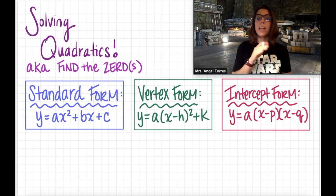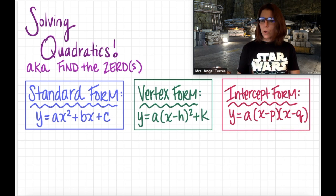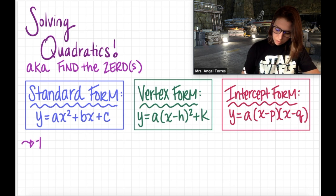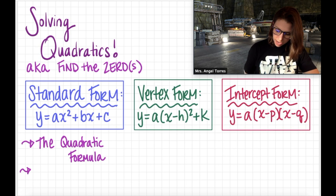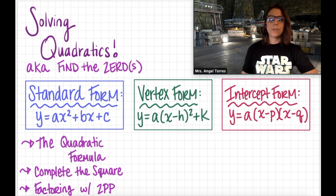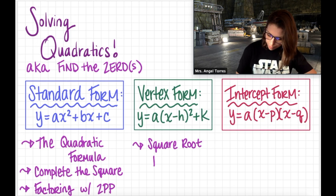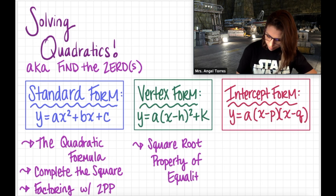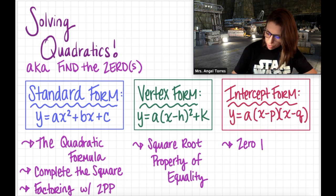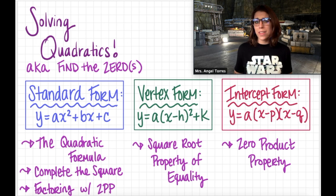Standard form, vertex form, and intercept form. There are different tools that we can use depending on the form that we're given. For standard form, there are a lot of tools that we're going to go over. We're going to learn how to use what's called the quadratic formula. We'll also learn how to complete the square. And we're going to learn how to do some factoring with something called the zero product property. In vertex form, we're going to learn how to use what's called the square root property of equality. And in intercept form, we are going to use something called the zero product property. So these are all tools that allow us to find those zeros to solve quadratics without going through the painstaking process of graphing, which I don't think any of us really want to go back to.